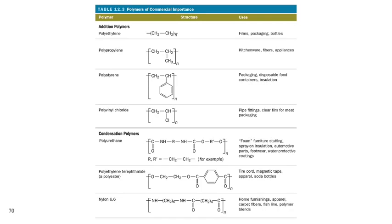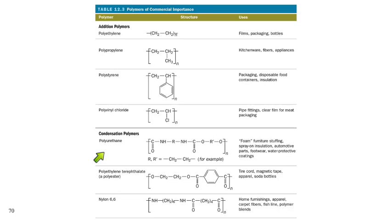Here's a table summarizing different types of plastics. Addition polymers include polyethylene, polypropylene, polystyrene, and polyvinyl chloride — these use different monomers. Condensation polymers include polyurethane, polyethylene terephthalate (a form of polyester), and nylon 6. There are lots of different nylon formulations.